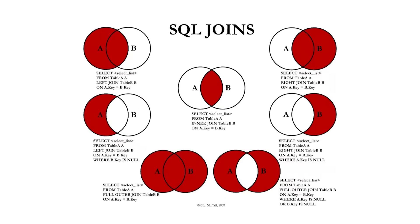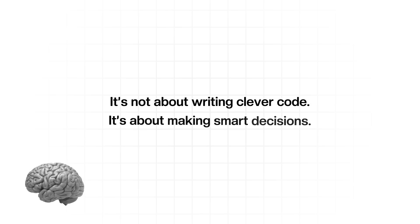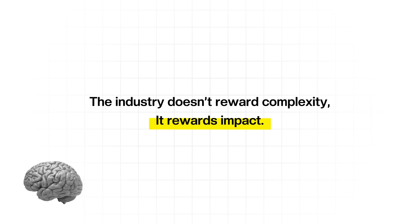Not the stuff that looks good on a tech blog post, but the stuff that actually makes your system faster, cleaner, and easier to work with. Here's the mindset shift: it's not about writing clever code, it's about making smart decisions. The industry doesn't reward complexity — it rewards impact. And the best engineers know the difference.